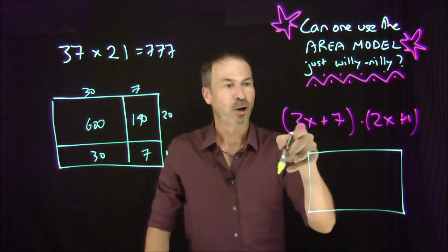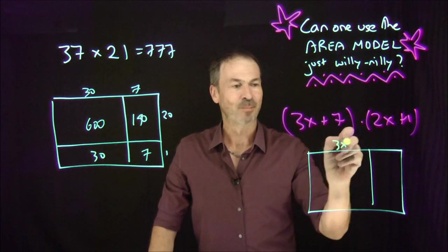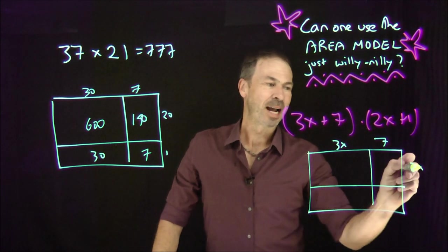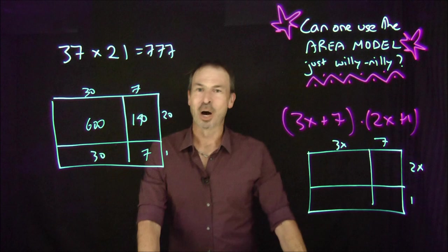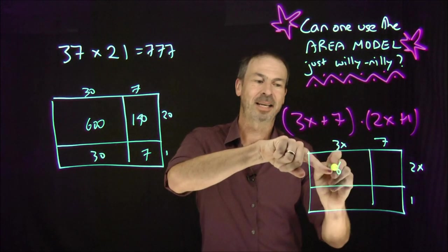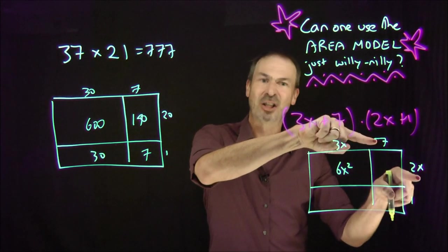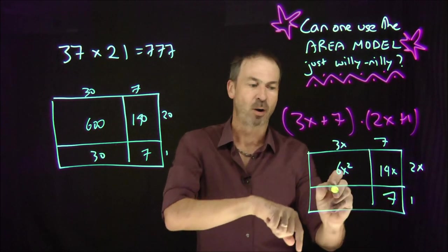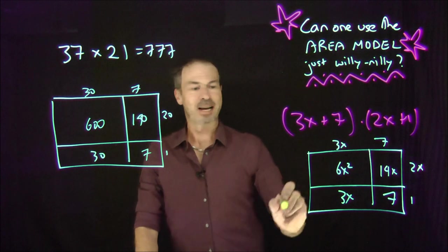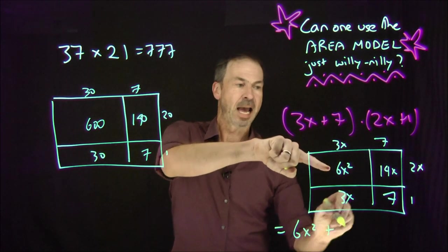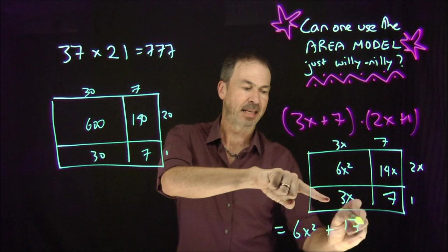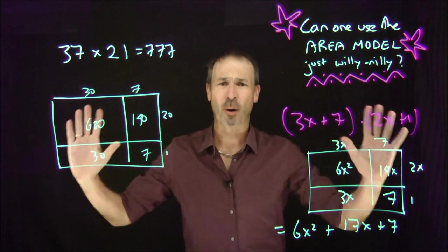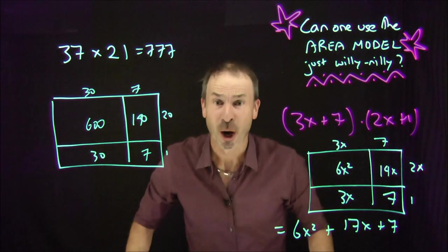I chop it into pieces: 3x and 7 across, 2x and 1 down. Working out the individual areas: 3x times 2x makes 6x², 7 times 2x makes 14x, 1 times 7 is 7, and 3x times 1 is 3x. Apparently the answer is 6x² + 17x + 7. No questions to be asked there — except there are questions to be asked right there.